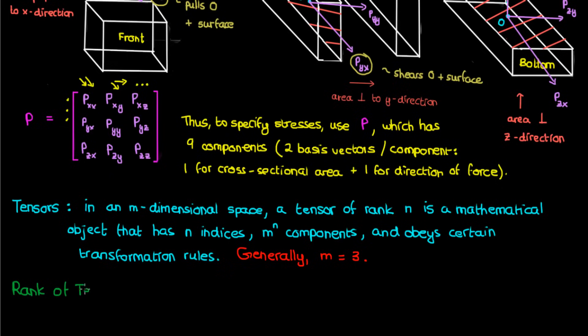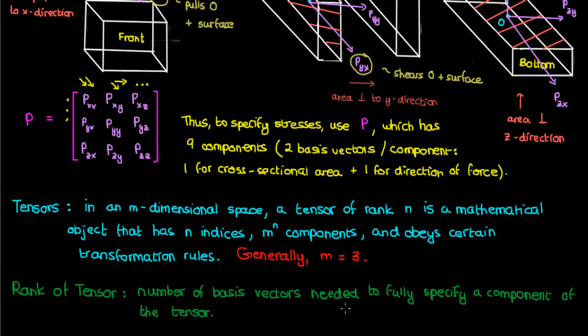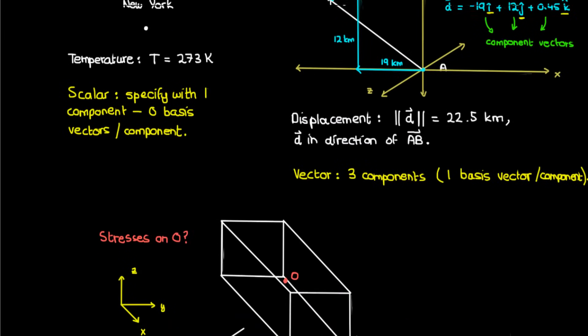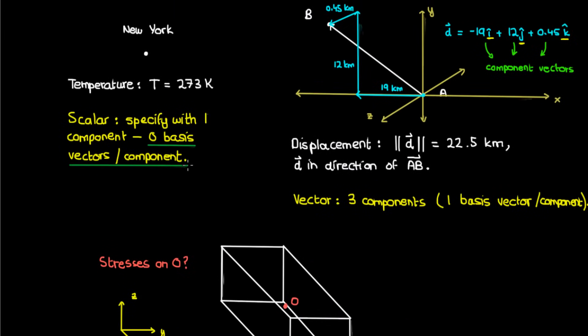What about the rank of the tensor? Well, you can think of the rank of a tensor as the number of basis vectors you need in order to fully specify a component of the tensor. For instance, if we go back up to our scalar, we can see that we needed zero basis vectors to specify our scalar component. Therefore, we can say that a scalar is a tensor of rank zero.